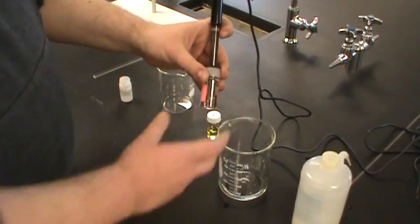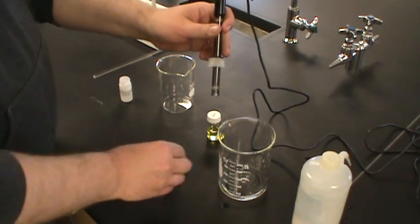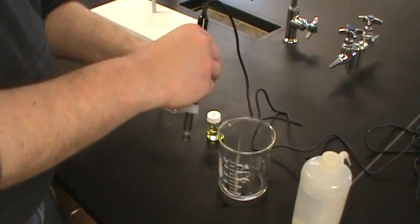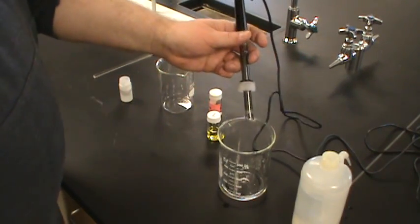And this is the pH 4 buffer. Let's keep that. Okay, that's calibrated for the pH 4 buffer. Let's take it out. Put the cap back on the calibration buffer so that we don't foul it.